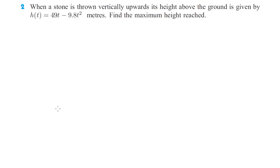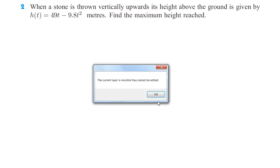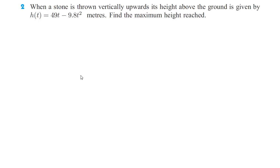Let's take a look at number 2. Here we have another parabola because it's T squared. Now this is negative T squared, so this is going to be an upside-down parabola. What we're looking for is the maximum height — find the maximum height reached, so we're looking for that max.